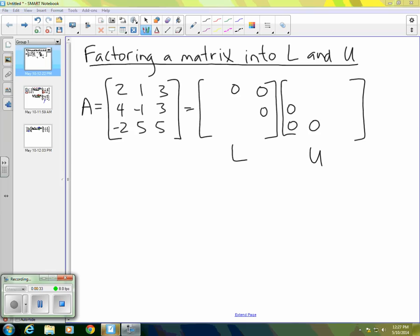Now, we might remember that when we row reduced A, the final result is actually an upper triangular matrix. So let's assume that maybe that's the U we're looking for. And so that would be 2, 1, 3, and negative 3, or 0, negative 3, negative 3, and 0, 0, 2. So that was the matrix we got when we row reduced A to upper triangular form.